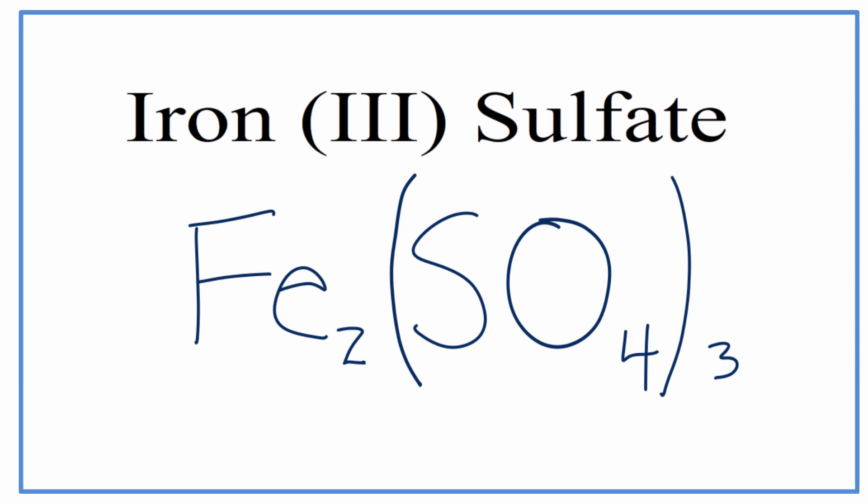That's the formula for iron 3 sulfate, but let's check our work. If we put our charges back in, the iron was plus 3, because we have this 3 up here, and the sulfate, that was minus 2, which we found on the common ion table.